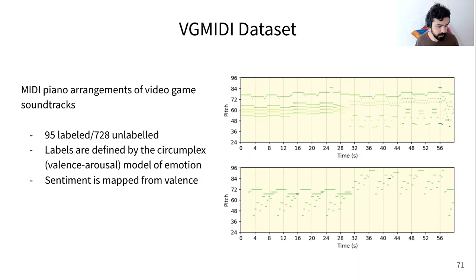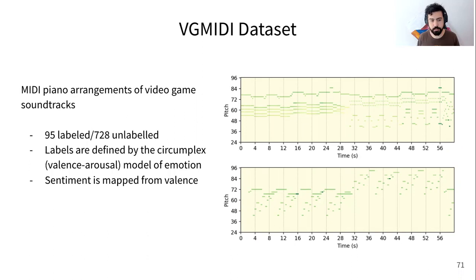To do that, we first had to create a dataset of music annotated according to emotion. At the time we started this work, there was no public dataset available for this type of work, so we created the VG Midi dataset — a MIDI dataset with piano arrangements of video game soundtracks. It initially had 95 labeled pieces and 728 unlabeled pieces, all labeled according to the circumplex model of emotion. Since in this work we're only interested in sentiment, we mapped sentiment from the valence dimension of the circumplex model.